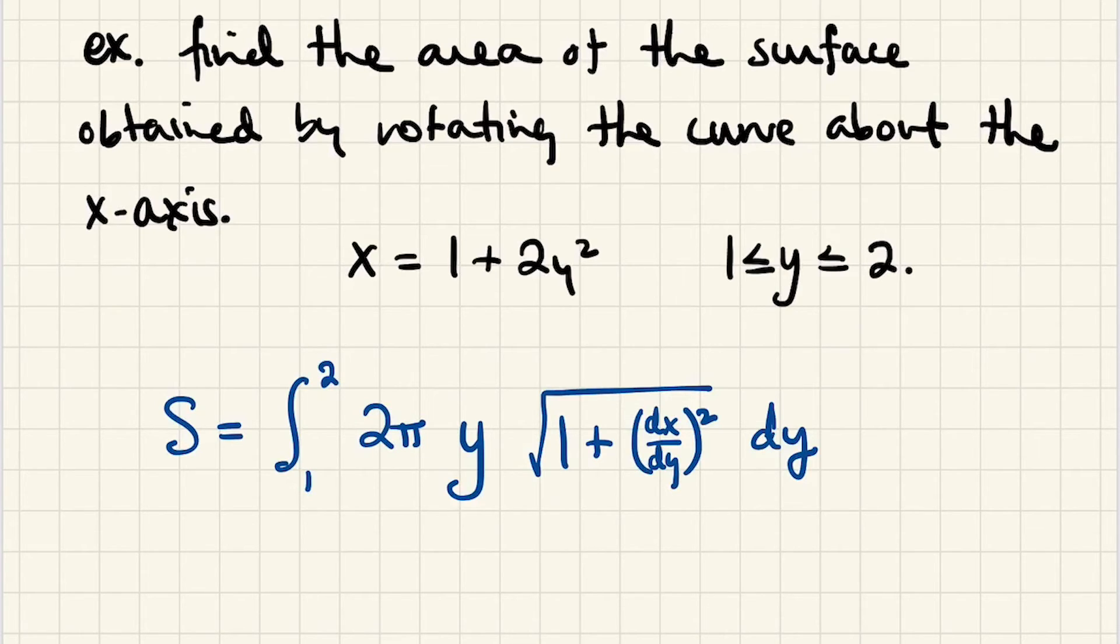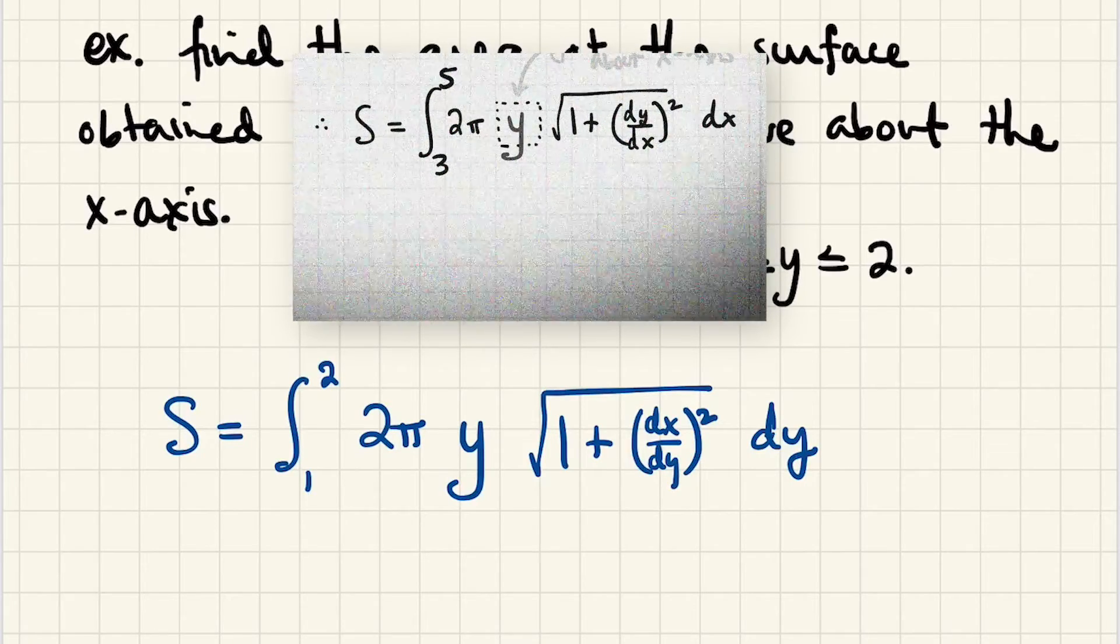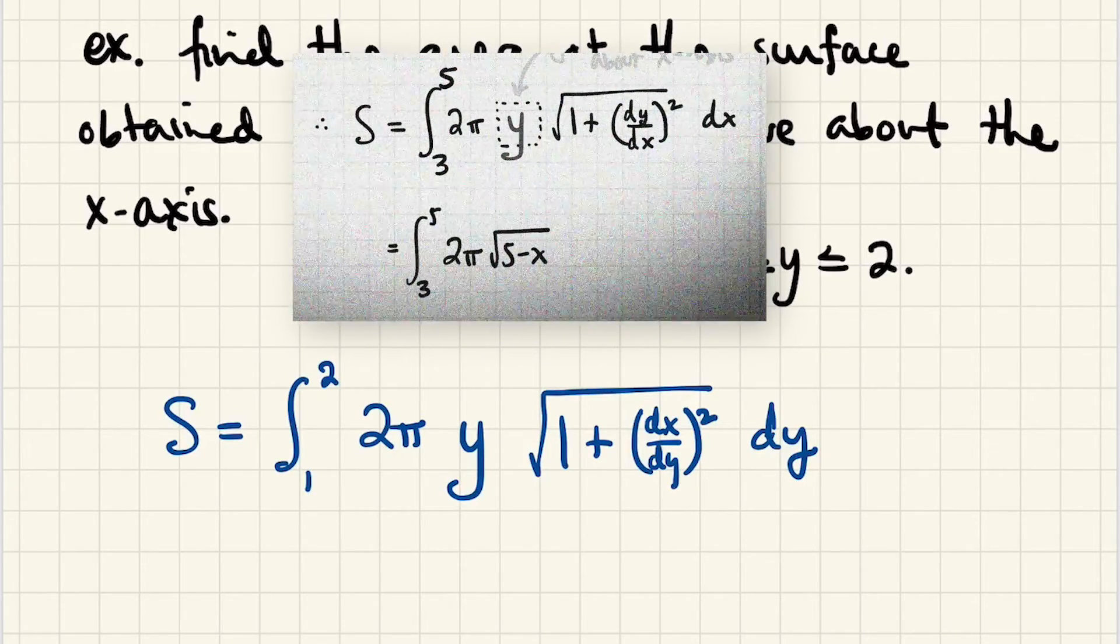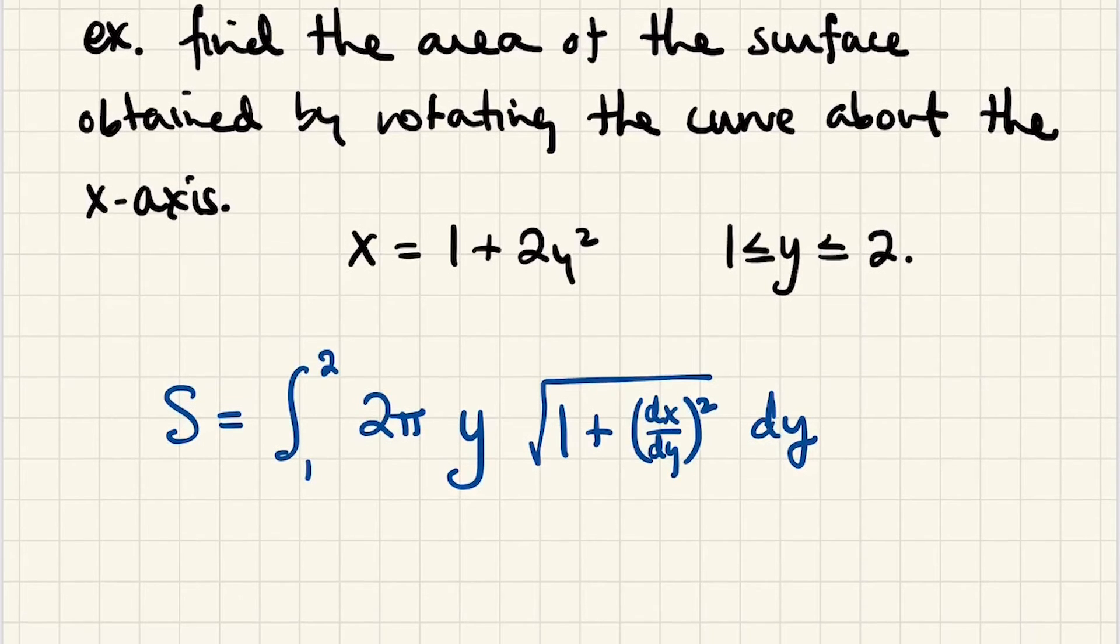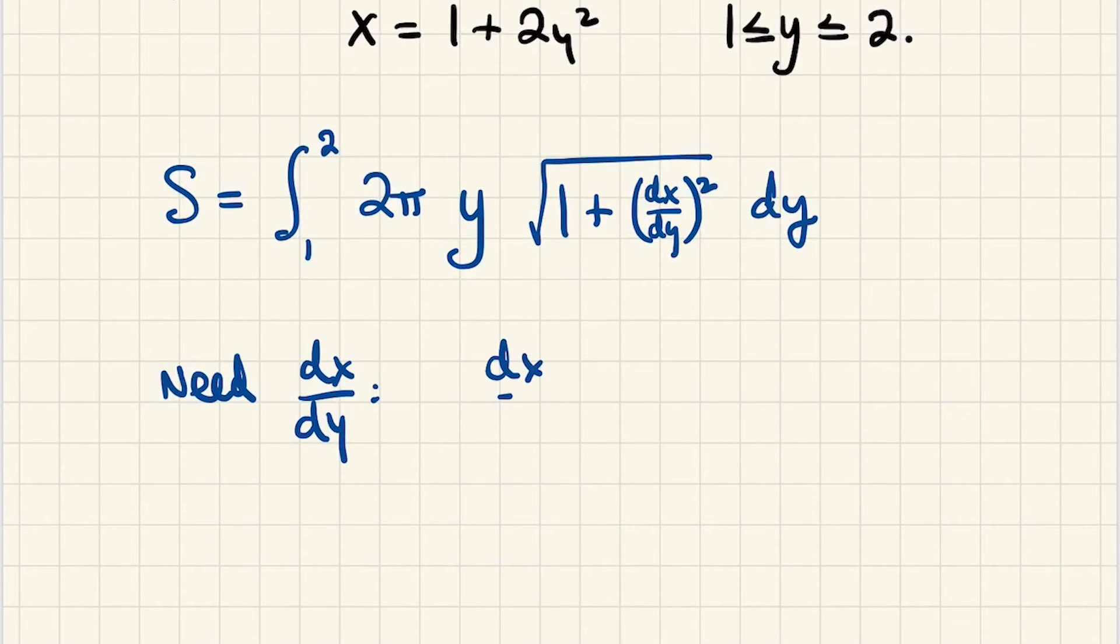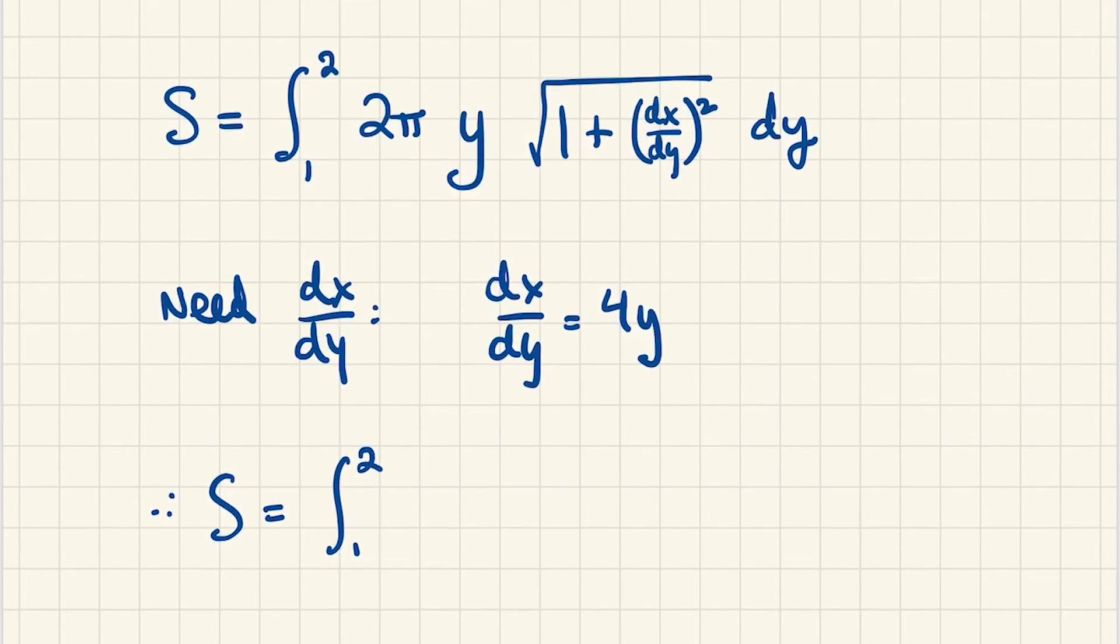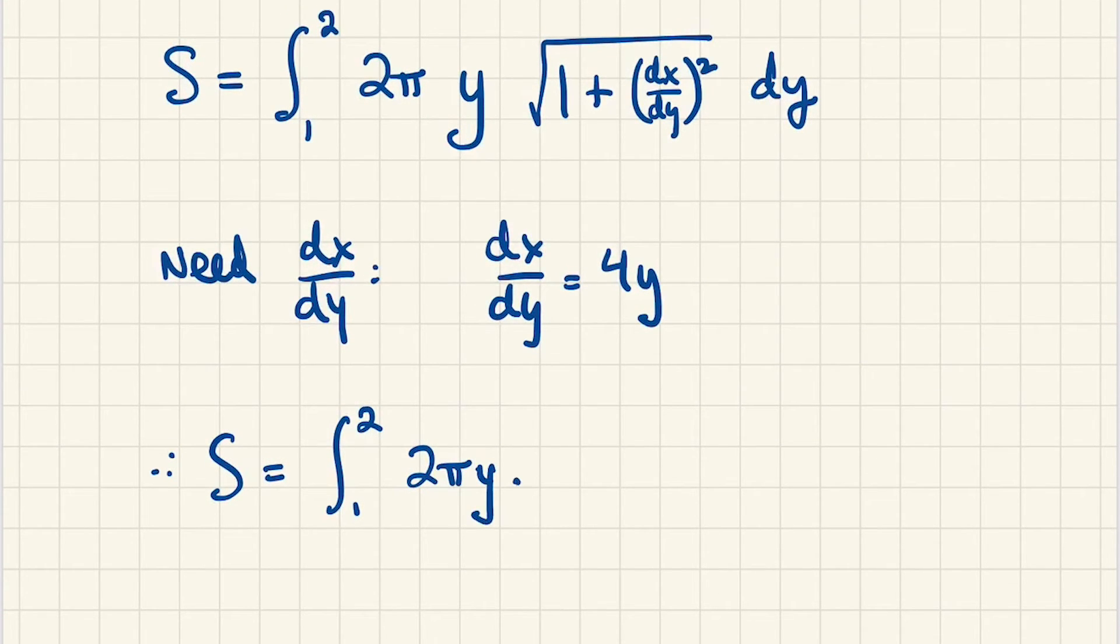Now the next thing is, do we need to replace that y with something in terms of x? In the last example we did have to replace that y with something. This time we don't, because we're integrating with respect to y, so that guy's good, we're going to leave him alone. All we need is the derivative of x with respect to y. So derivative of x with respect to y is 4y. So therefore our integral is the integral from 1 to 2 of 2 pi times y radical 1 plus 4y quantity squared dy.